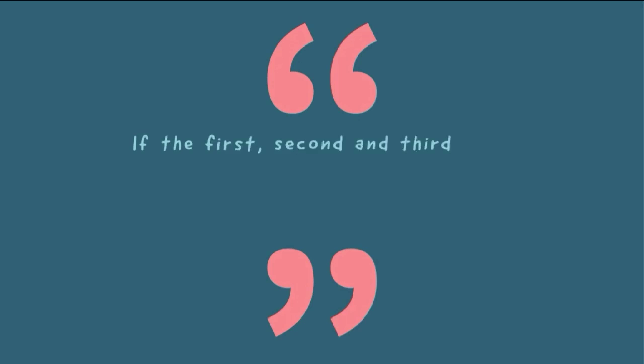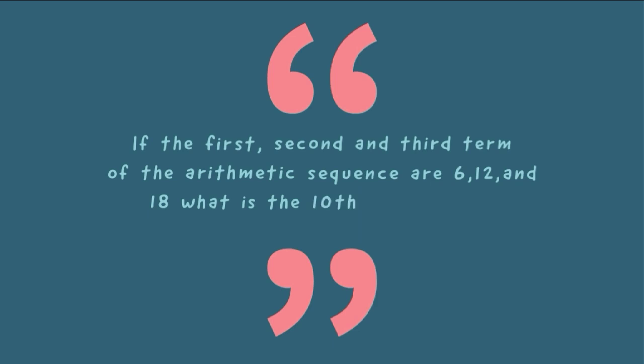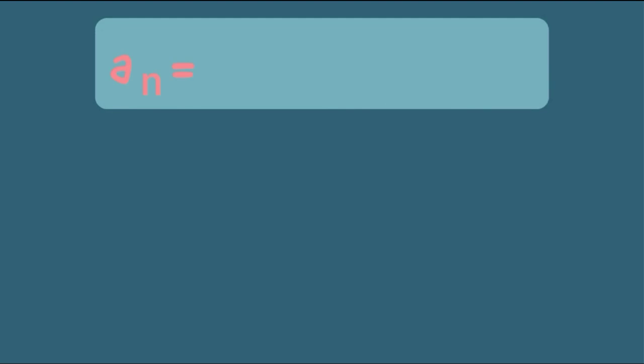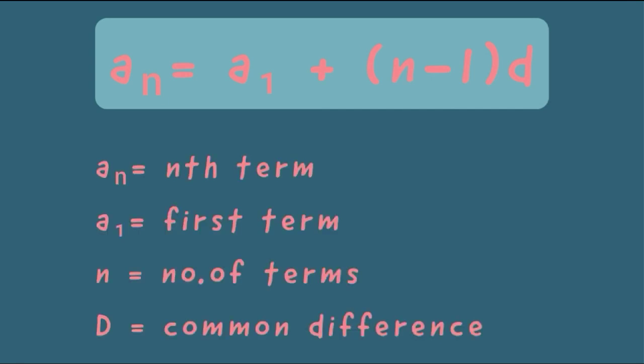If the first, second, and third terms of the arithmetic sequence are 6, 12, and 18, what is the tenth term of the sequence? This is an arithmetic problem on finding the nth term of a sequence. The formula for getting the nth term of an arithmetic sequence is: a sub n equals a sub 1 plus (n minus 1) times d, where a sub n is the nth term, a sub 1 is the first term, n is the number of terms, and d is the common difference.